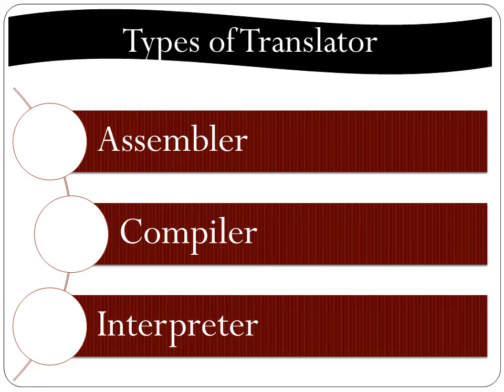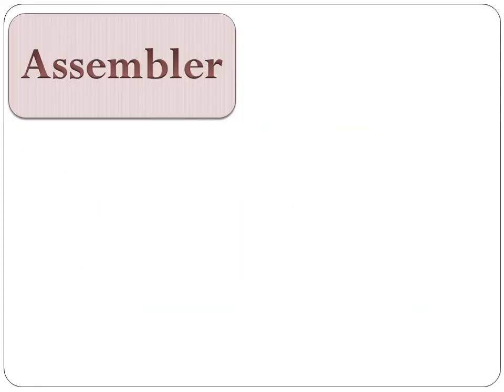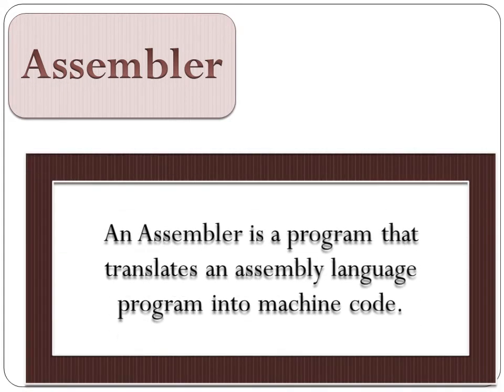We will discuss these translators one by one. First we talk about assembler. This is a program that translates an assembly language program into machine code. In assembly language, the commands we use are represented by mnemonics. Mnemonics are the short names — short alphabets — that are used in assembly language. So the program written in assembly language is converted into machine code, or in the form of 0 and 1, by using an assembler.